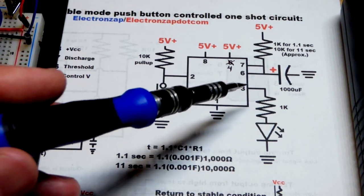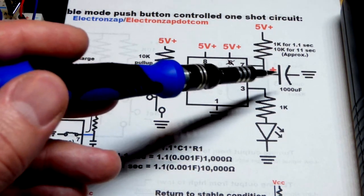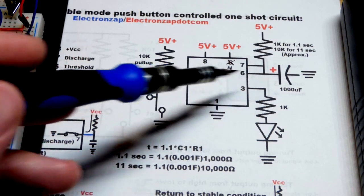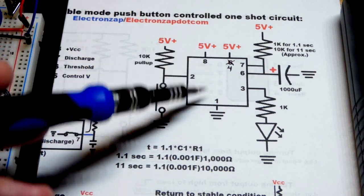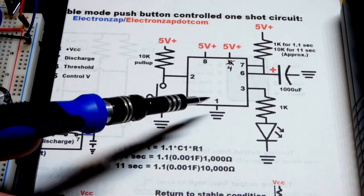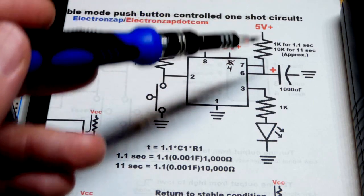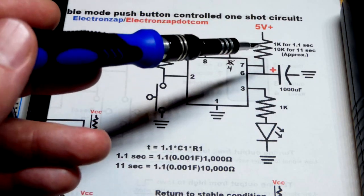Once we set the output high, we'll start charging this capacitor. The capacitor will be zero volts. It will charge until it gets to two-thirds of the supply voltage. And it doesn't matter what the supply voltage is. It's going to charge through a resistor. The more voltage, the quicker it's going to charge.